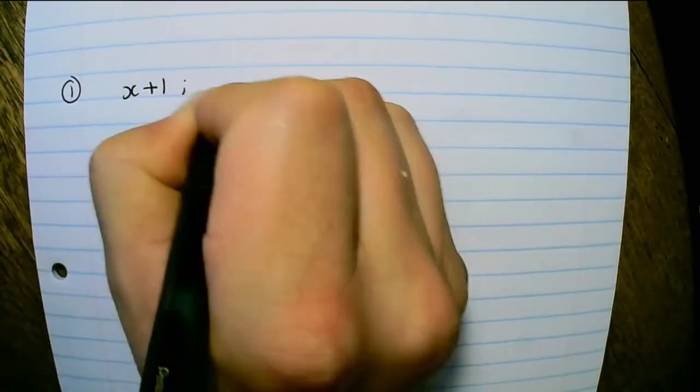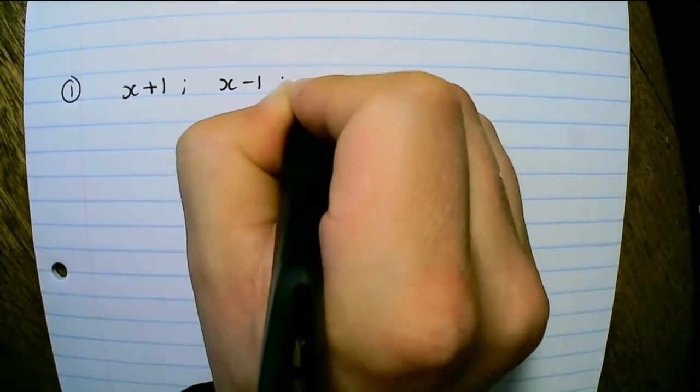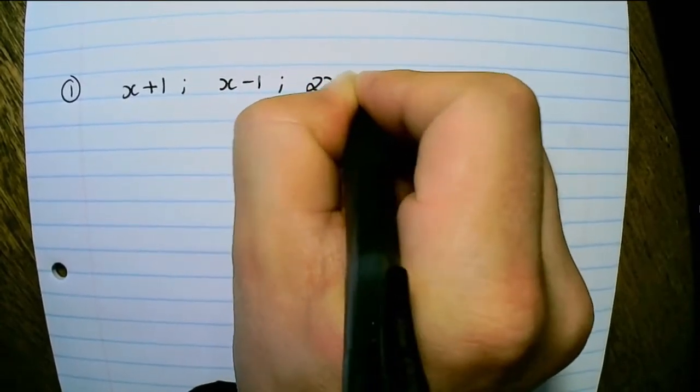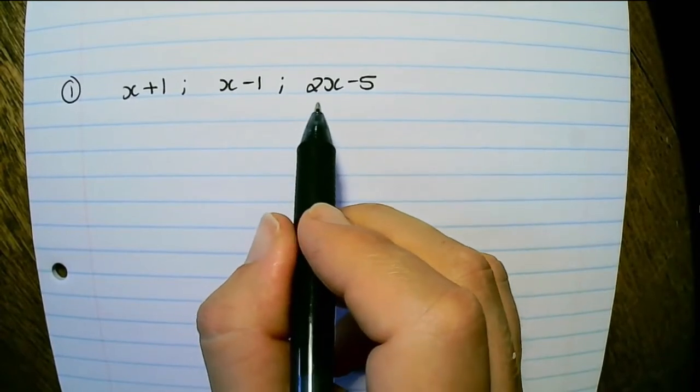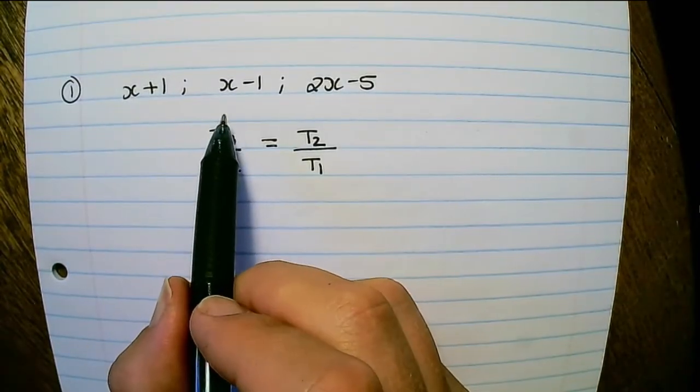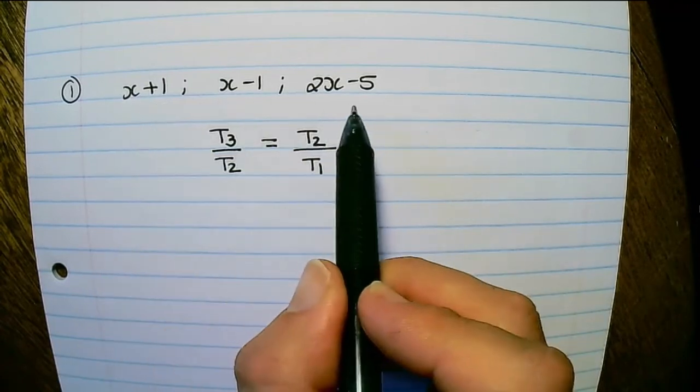So we are given x plus 1, x minus 1, and 2x minus 5, and this is the first three terms of a geometric series. What we know is that a geometric series will have a constant ratio.